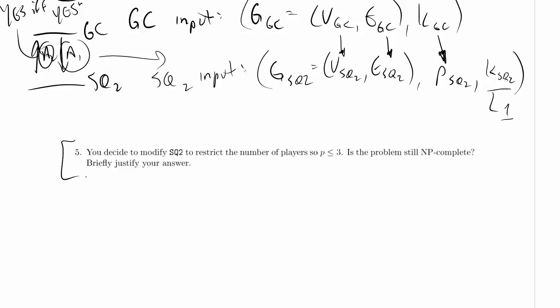We are on part 5 of problem 6 in the practice exam. You decide to modify Space Quest 2 to restrict the number of players so p is less than or equal to 3. So it's not a massive multiplayer game anymore, it's only allowed to have up to 3 players. Is the problem still NP-complete? Briefly justify your answer.